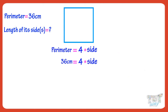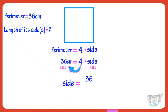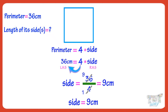We can also solve it the equation way. Keeping S on the right-hand side, we can shift 4 to the right-hand side and change its sign. Since it is getting multiplied, on the right-hand side it will be divided. So, S equals 36 divided by 4. And 36 divided by 4 gives us 9. So, side equals 9 cm.